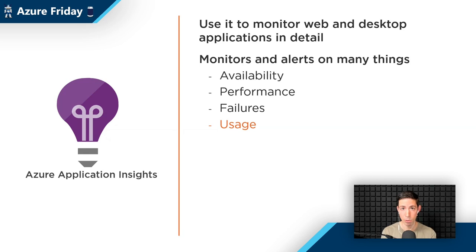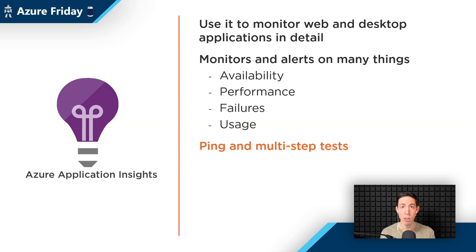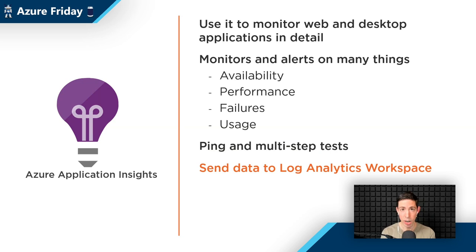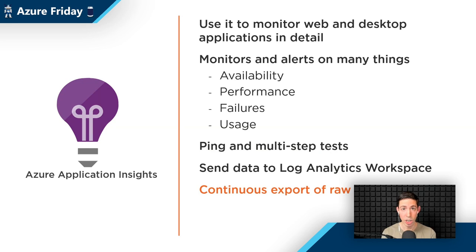You can also set up pings and multi-step web tests, where you say you want your website to be tested from five geographical locations, testing the home page, the about page, and then the episode page. You can alert when that goes wrong or even when it goes right. Azure Application Insights sends all its data to a Log Analytics workspace, which is a bucket that collects data Azure Monitor uses. You can also continuously export Application Insights data to blob storage in JSON format. It also comes with an application map, which is one of my favorite features.